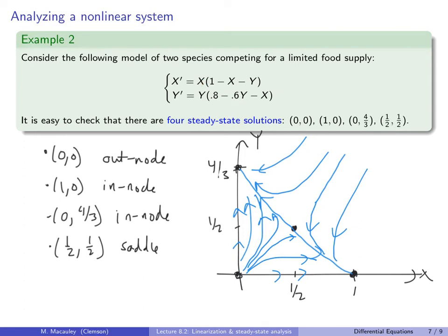Changing the parameters shifts the nullclines relative to each other. Only one nullcline is different between the two examples, yet that changes the entire qualitative behavior — whether the coexistence equilibrium is stable or unstable. This motivates looking at the general Lotka-Volterra system with arbitrary constants.